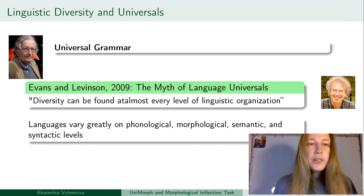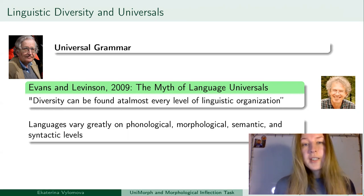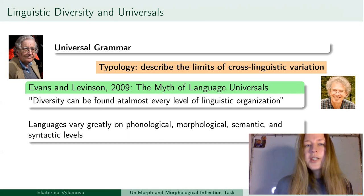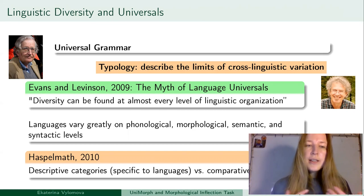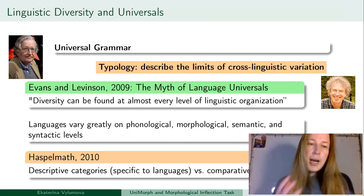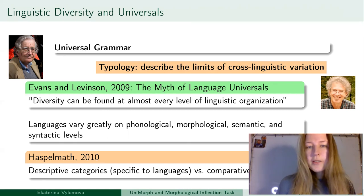To quote them: 'Diversity can be found at almost every level of linguistic organization. Languages vary greatly on phonological, morphological, semantic, and syntactic levels.' Typology describes these limits of cross-linguistic variation. In a recent paper, Martin Haspelmath introduced and contrasted descriptive categories — which are specific to individual languages — and comparative concepts, which can be used to compare languages across the board.